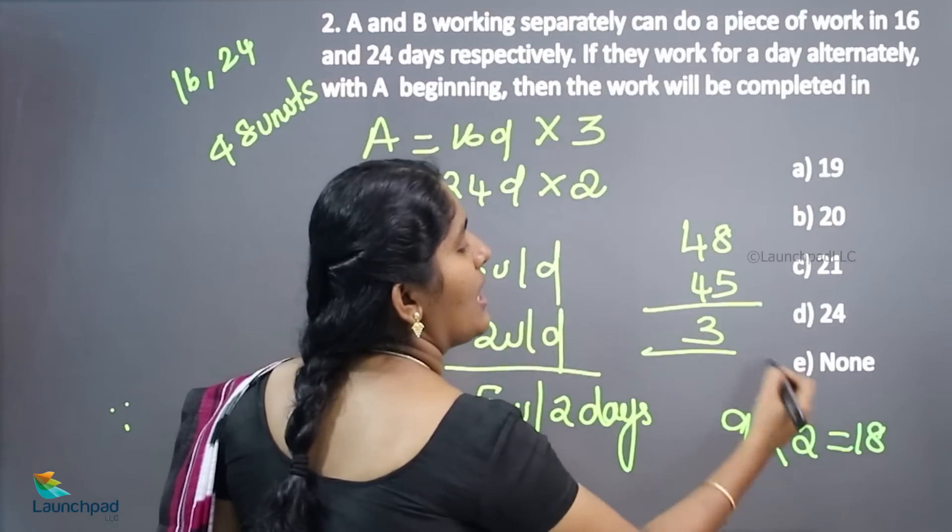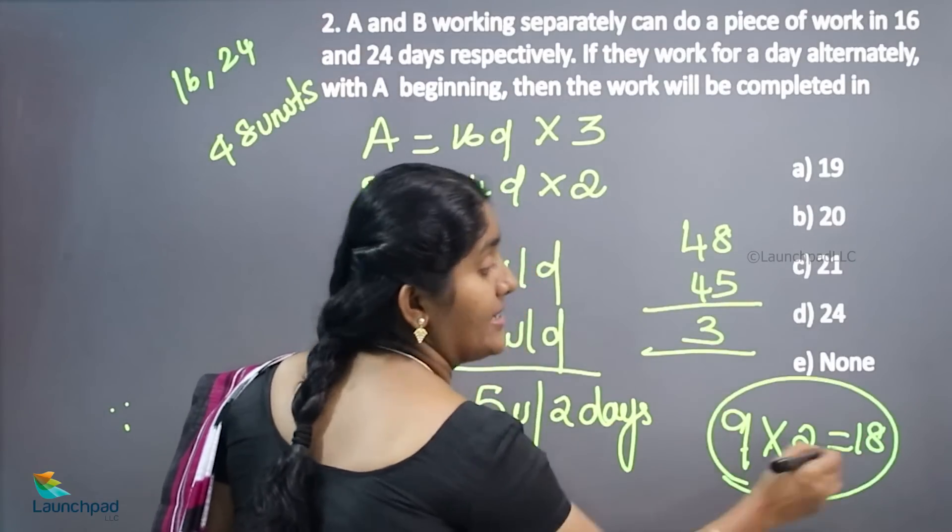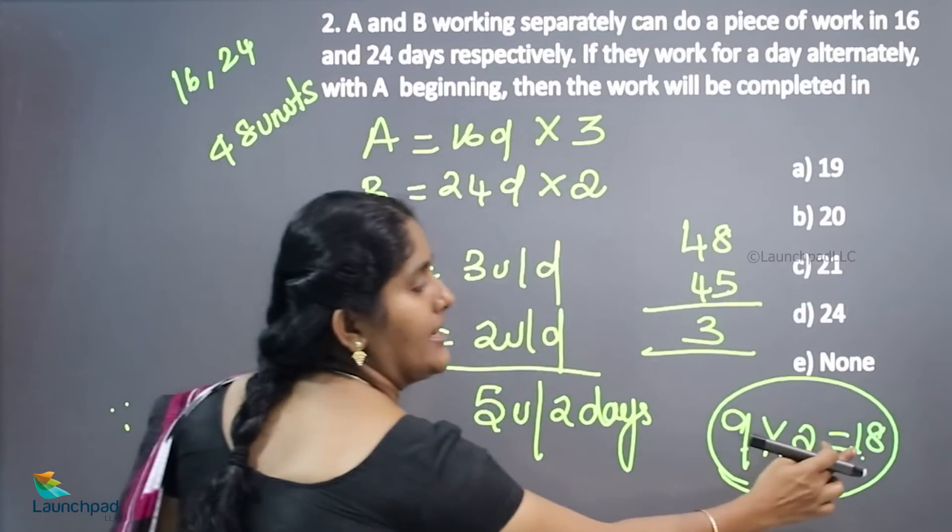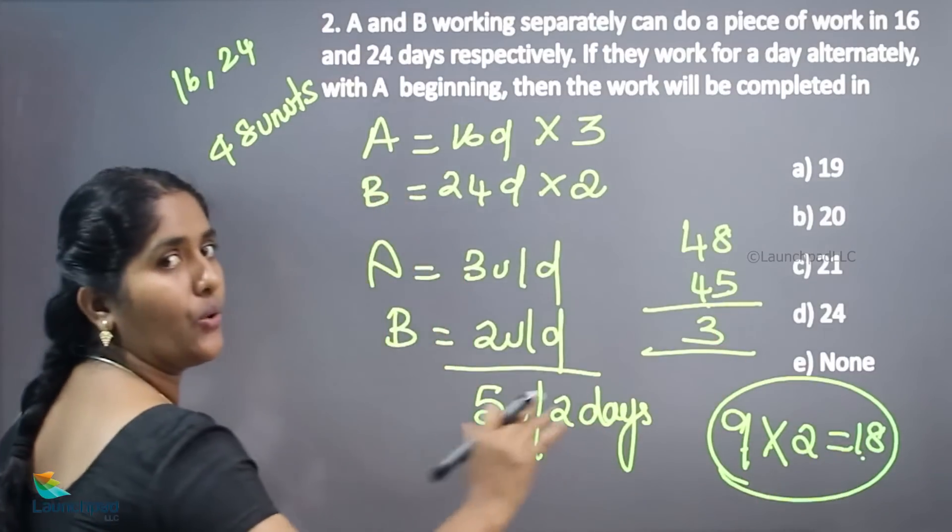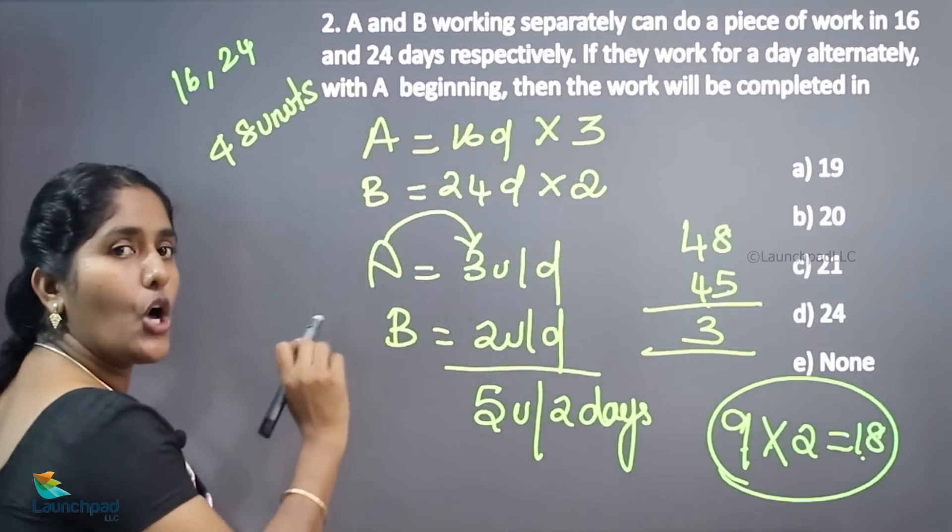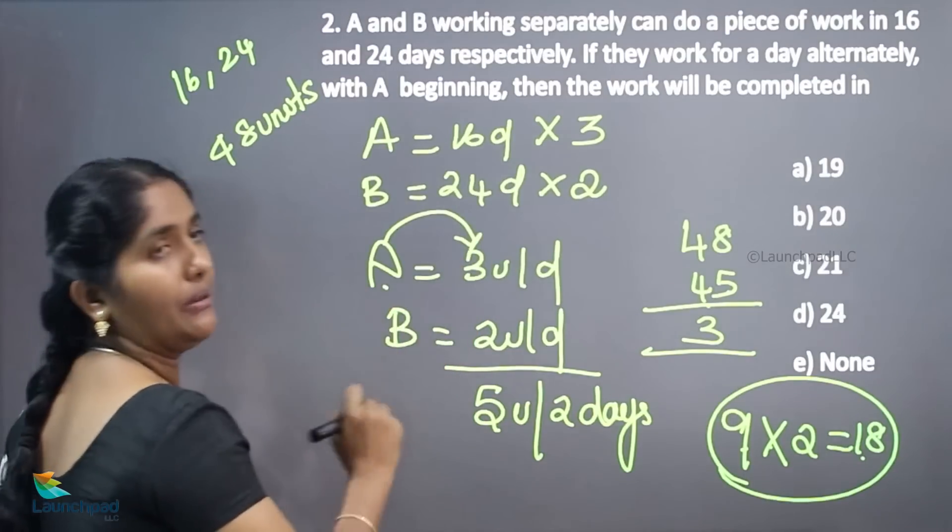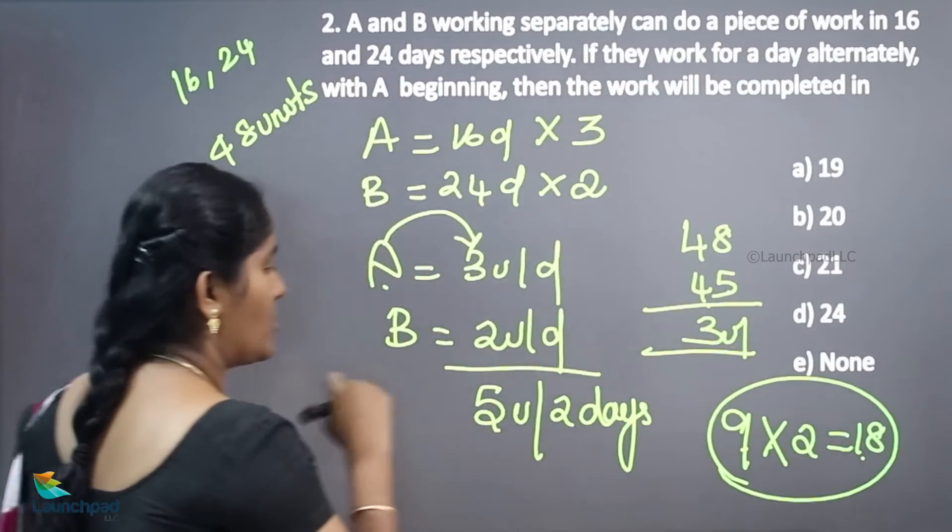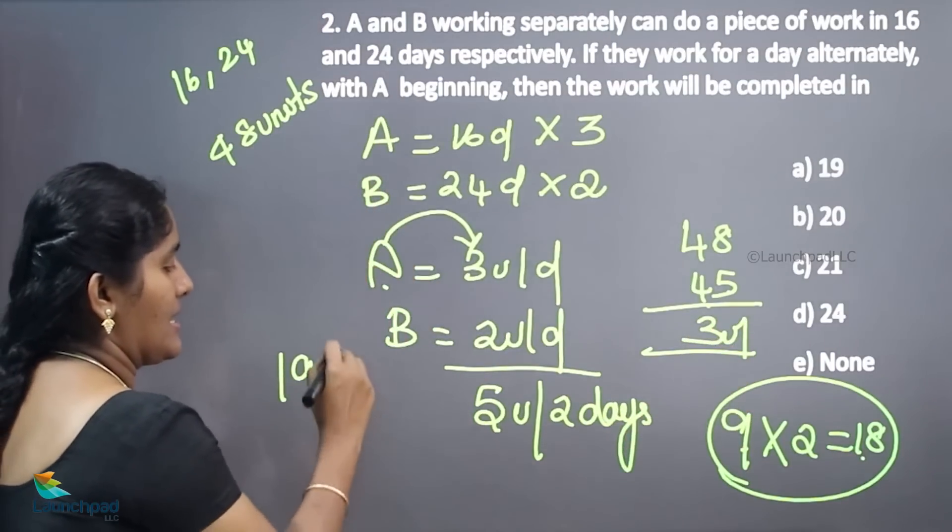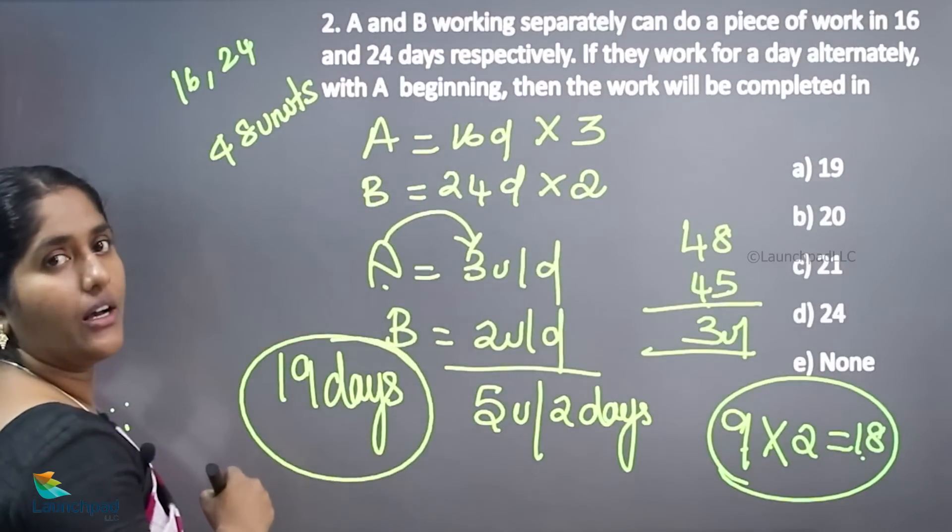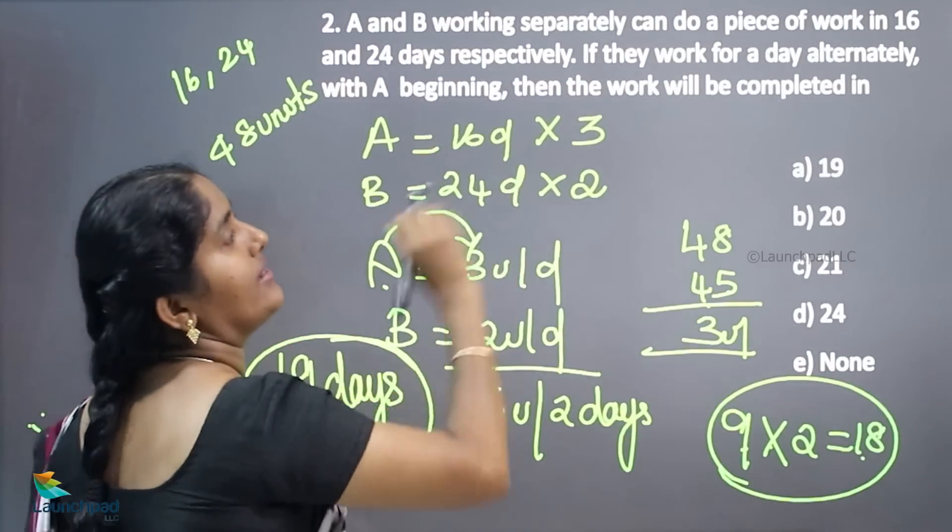So actually 18 days, 45 units are over. The next day A can do the job. How much can he complete? He can complete 3 units. So remaining 3 units is there. So totally 19 days require to complete the whole work by means of alternate concept.